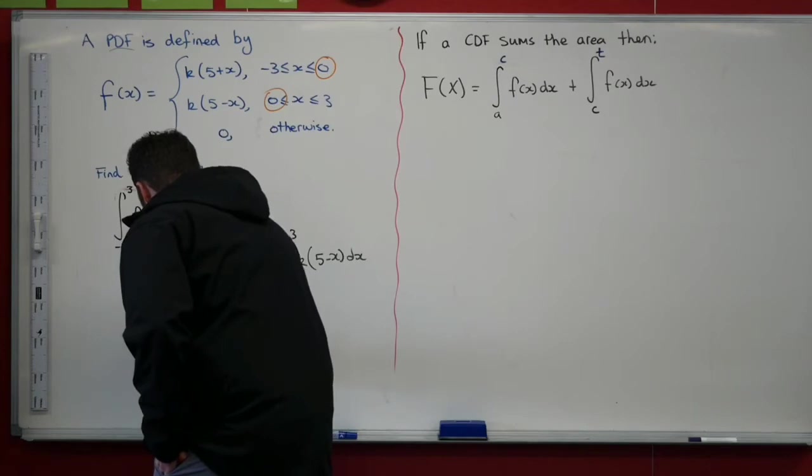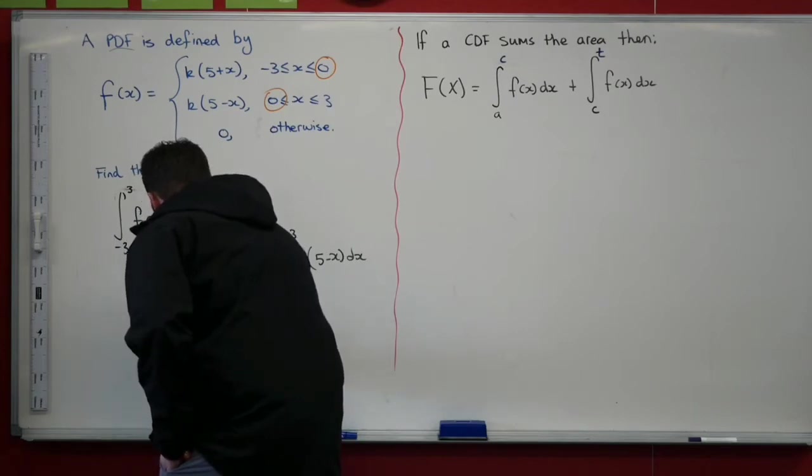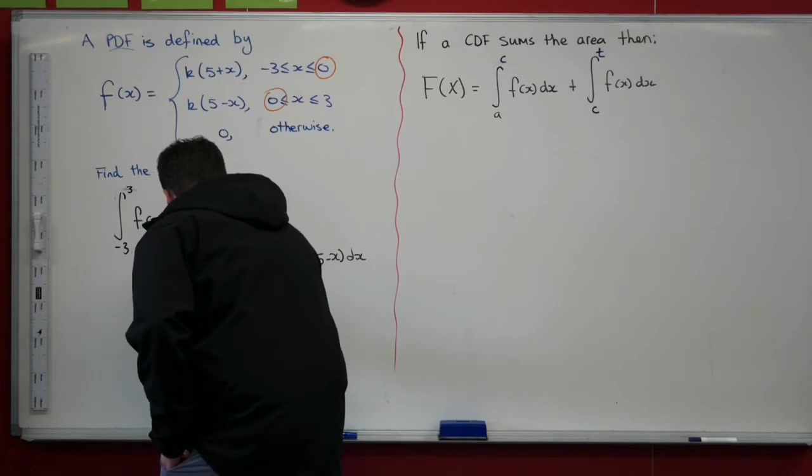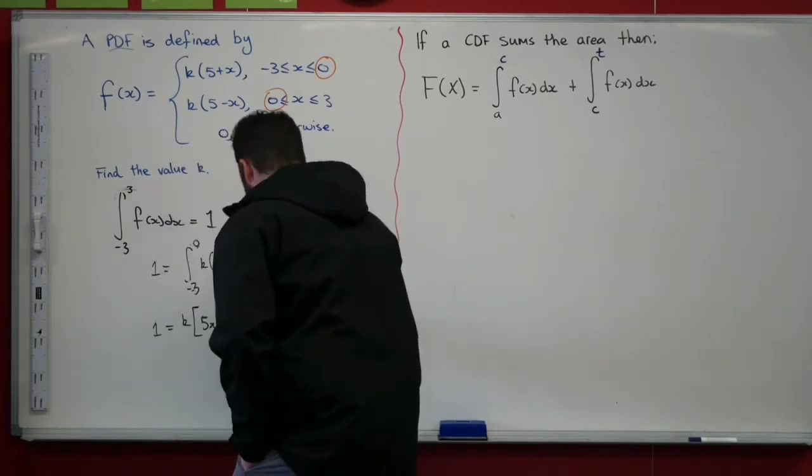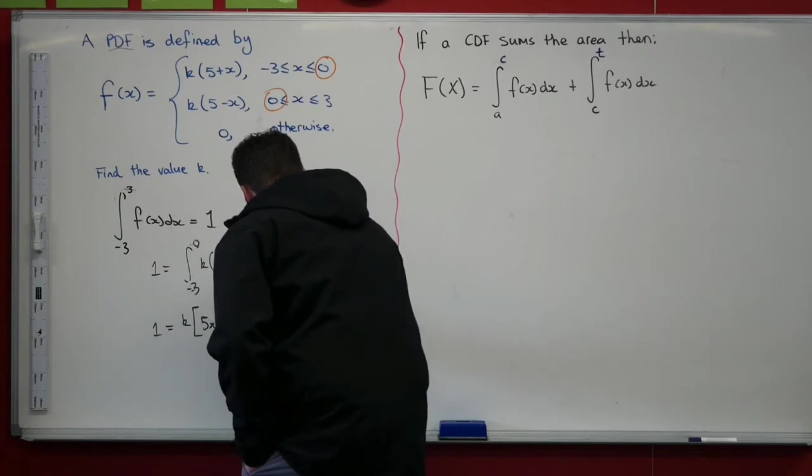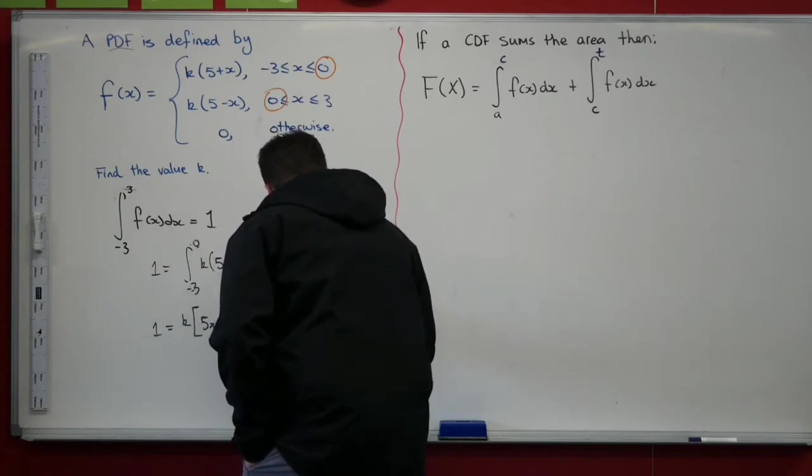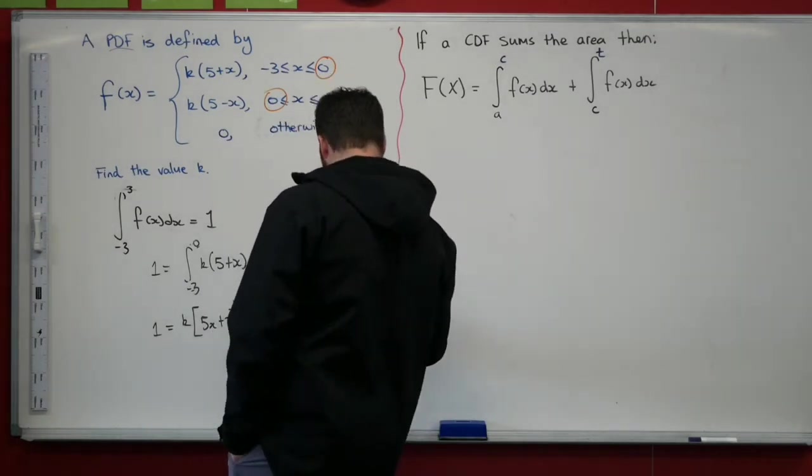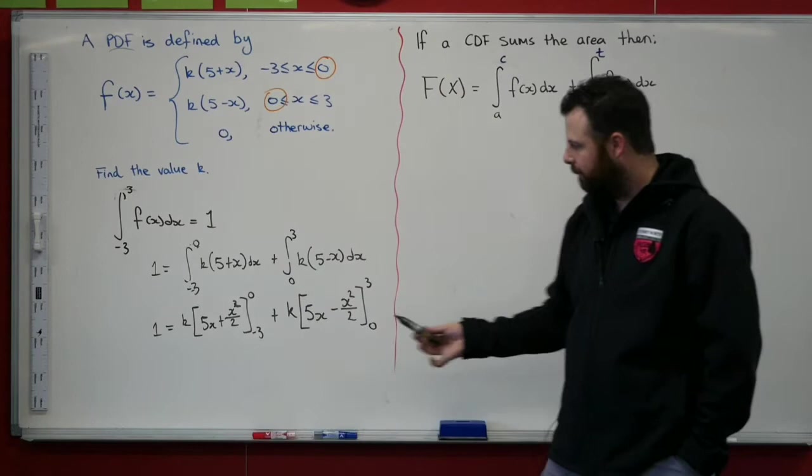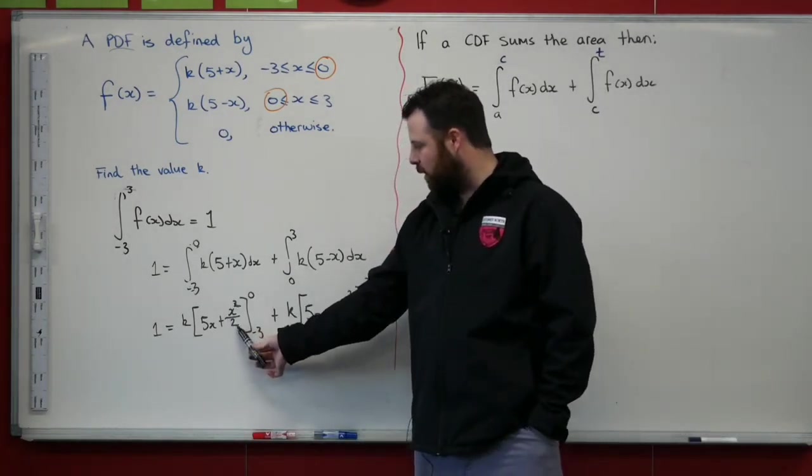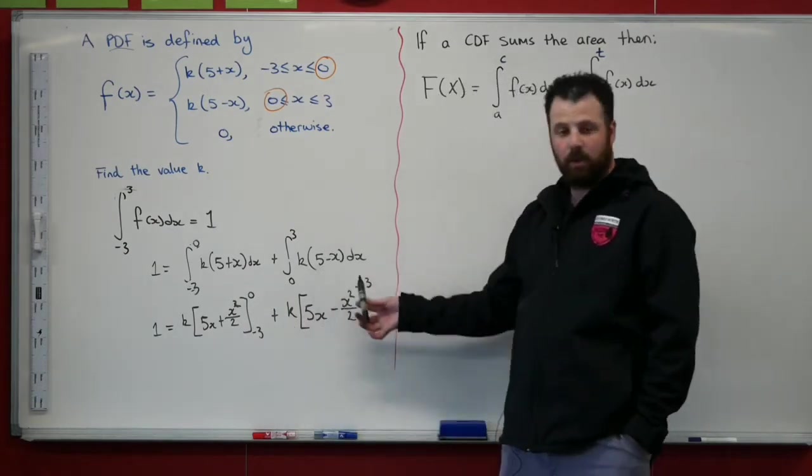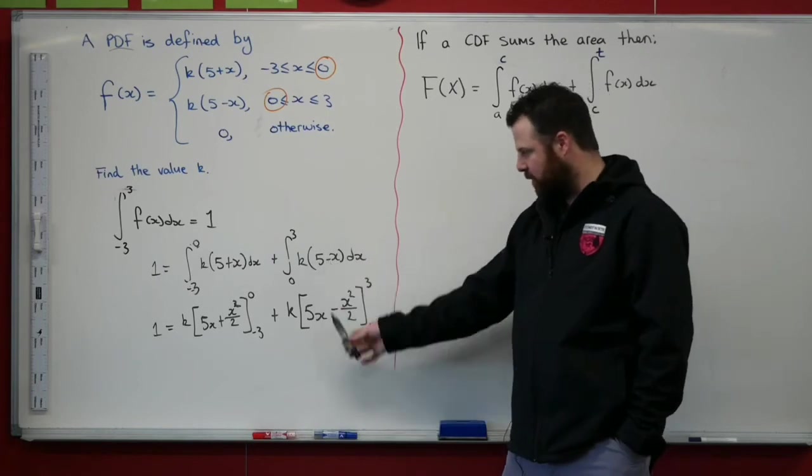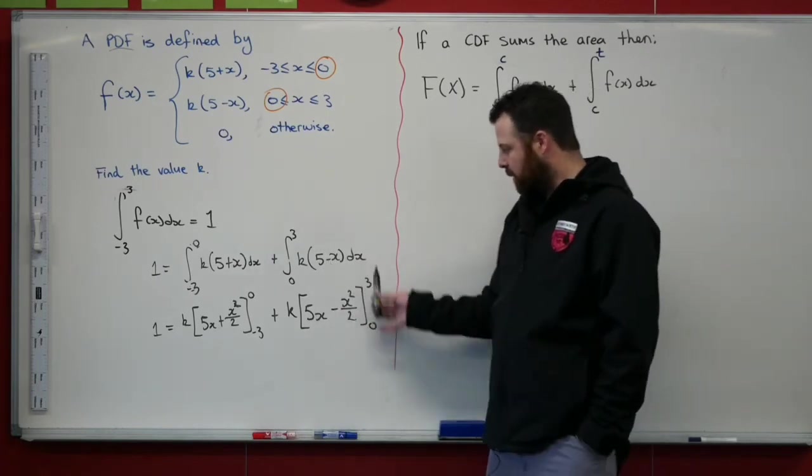So what I know is 1 equals k(5x + x²/2) between minus 3 and 0 plus k(5x - x²/2) between 0 and 3. So what we are left with was 5x + x²/2, evaluate that between 0 and negative 3. Then we're going to add the integral to the other side. It's the same thing with just a change in sign. So 5x - x²/2 between 3 and 0.